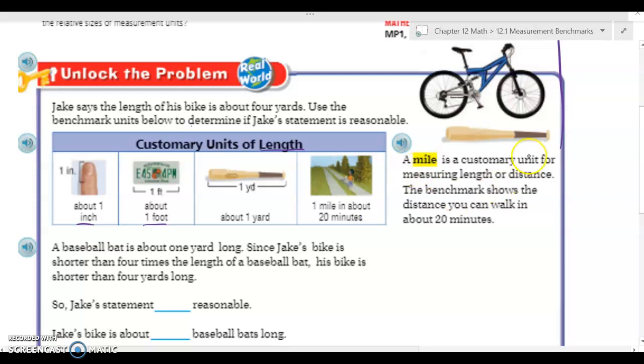If you look over here it's got some extra details. A mile is a customary unit for measuring length or distance. The benchmark shows the distance you can walk in about 20 minutes. So I'm going to use this information to help us answer our problem, and I'm going to go back and reread that and use CUBES.